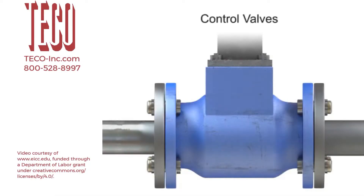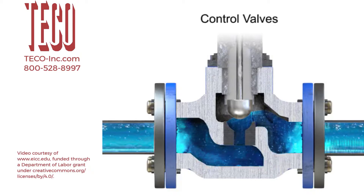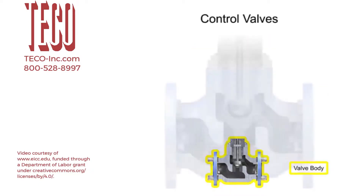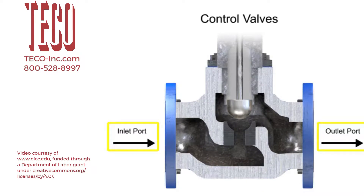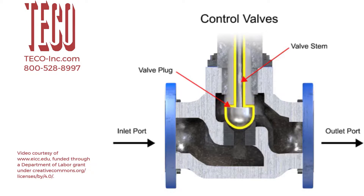Control valve actuators control fluid in a pipe by varying the orifice size through which the fluid flows. Control valves contain two major components: the valve body and the valve actuator. The valve body provides the fluid connections and a movable restrictor comprised of a valve stem and plug that is in contact with the fluid that varies the flow. The valve actuator is the component that physically moves the restrictor to vary the fluid flow.